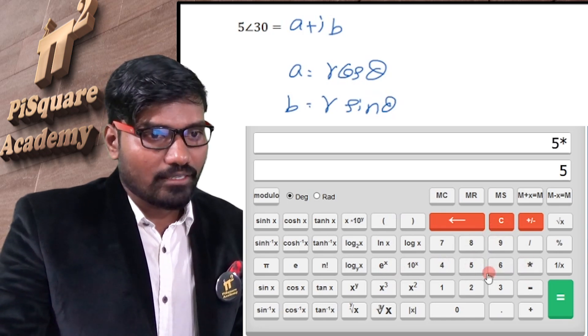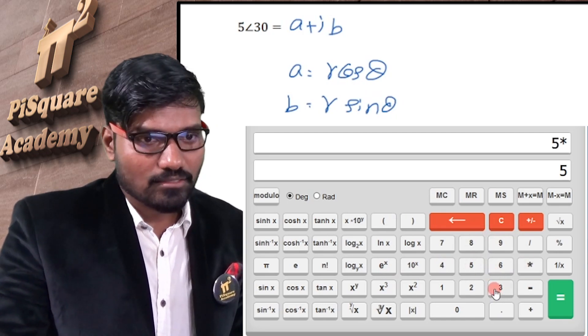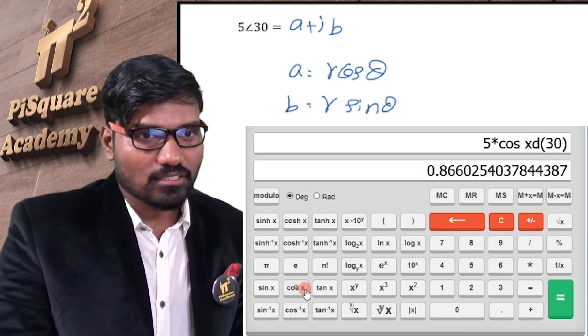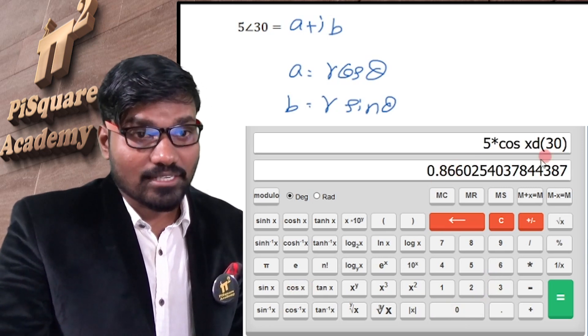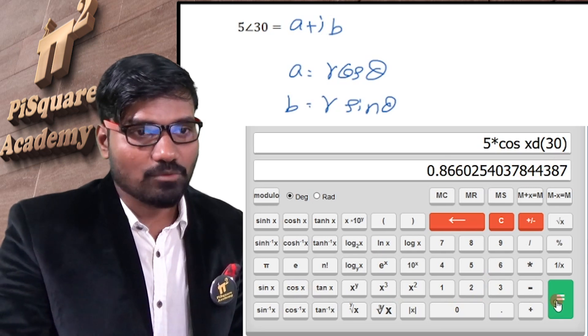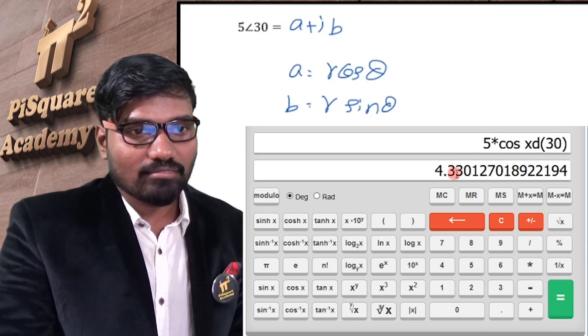So r value is 5, 5 into theta is 30 degrees cos. So 0.866, that's the initial answer, final answer is plus equal, this is the final answer 4.330.